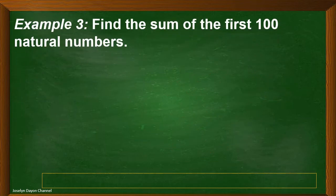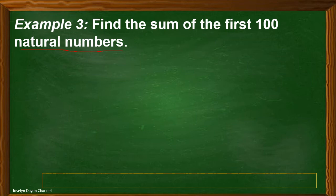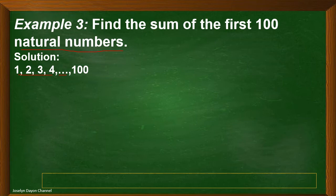Now let's consider the third example: find the sum of the first 100 natural numbers. When we talk about natural numbers, it refers to the counting numbers, and counting numbers begin with 1. So if we illustrate the natural numbers up to 100, we have 1, 2, 3, 4, then ellipses, and the last number is 100.